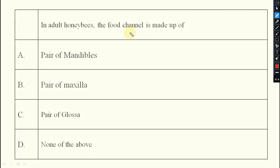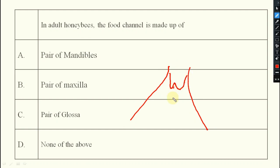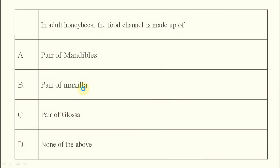Next: in adult honeybees, the food channel is made up of what? In adult honeybees there is the maxilla, the paraglossa, and the glossa. The answer — option C — is the pair of glossa.